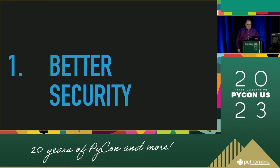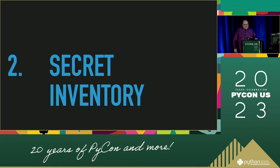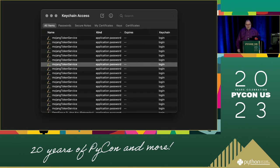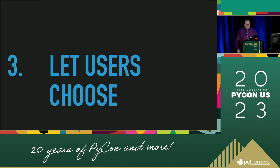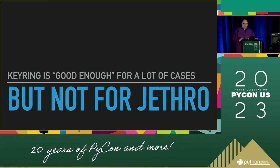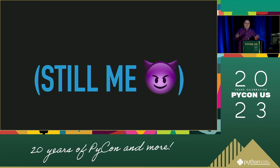Keyring gets you a couple things by default. It defaults to using the operating system's credential store, which means you get all the collective wisdom of your operating system vendor's ideas about what threats are salient to defend against and what the best ways to deal with those threats are. It also means that when you or your users go to review what sensitive information is available on their computer, they can use standard interfaces on their operating system. Keyring supports multiple backends, which means users with different needs can configure applications using Keyring to pull secrets from more secure places if they need to. Just using Keyring is the 80 in the 80/20 of this talk.